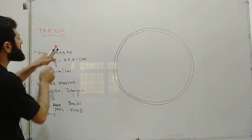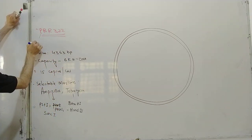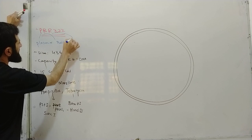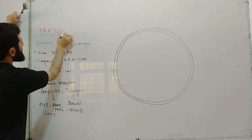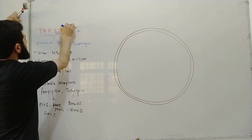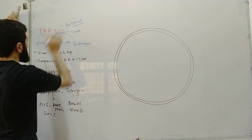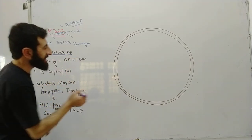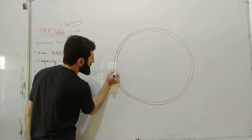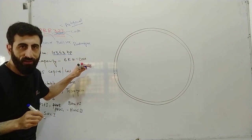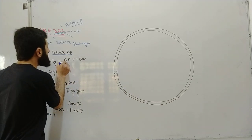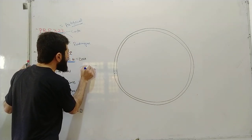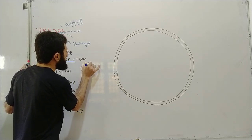An example of an artificial plasmid is PBR322. The name PBR322 comes from Bolivar and Rodriguez, the scientists who constructed it, and its position number 322. The size of PBR322 is 4,361 base pairs, and it can carry up to 6 kilobases of foreign DNA.